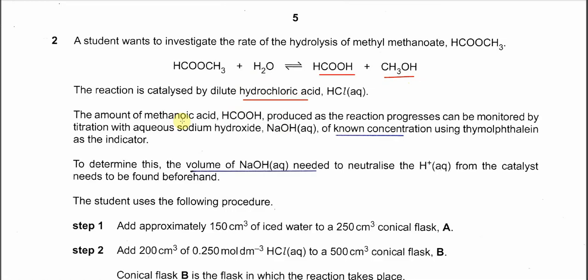The amount of methanoic acid produced can be monitored by titration with aqueous sodium hydroxide of known concentration, using thymolphthalein as indicator. In the reaction mixture there are going to be two acids: the catalyst (HCl) and the methanoic acid. So in order to get the volume of sodium hydroxide used for the methanoic acid, we need to first find the sodium hydroxide that reacts with the HCl, then subtract it.